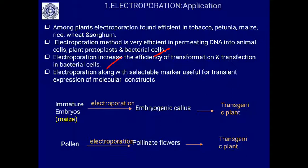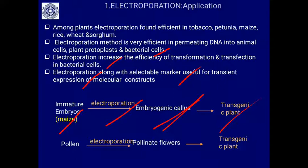Electroporation along with a selectable marker is useful in the transient expression of a molecular construct — if we want to see temporary changes in the cell due to the expression of a particular gene, we can use this method. For example, immature embryos of maize can have the gene of interest introduced through electroporation, the embryo will form a callus, and we can get a lot of transgenic plantlets. Similarly, pollen when exposed to electroporation takes up the gene of interest, and when used to pollinate flowers it results in transgenic plants.